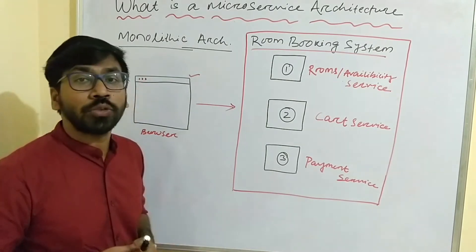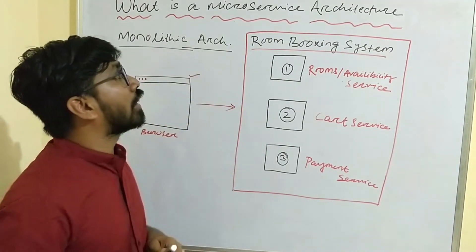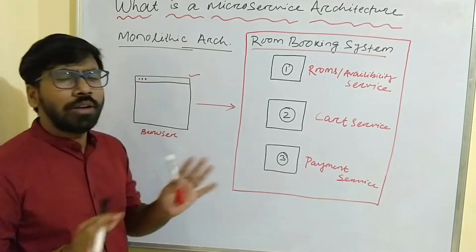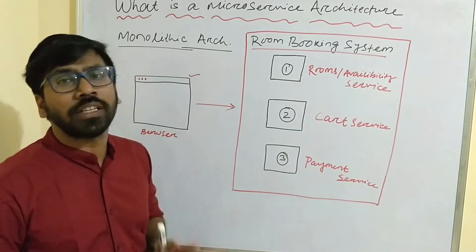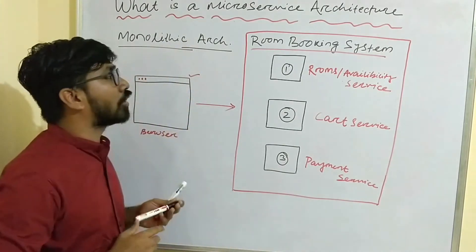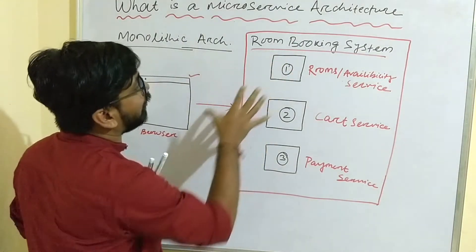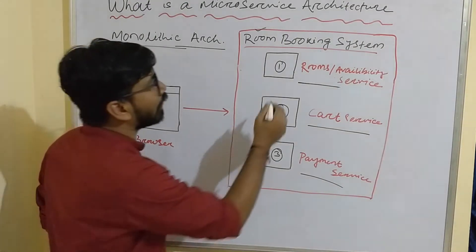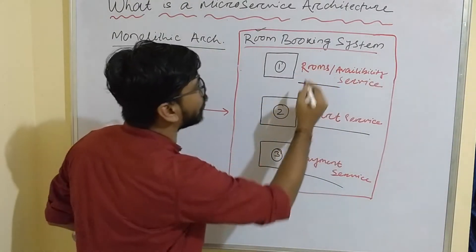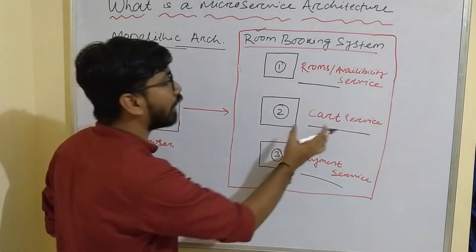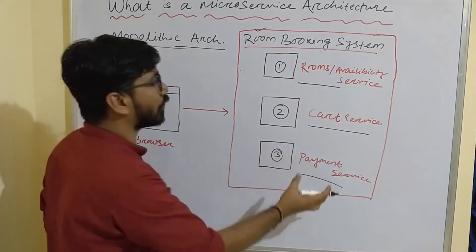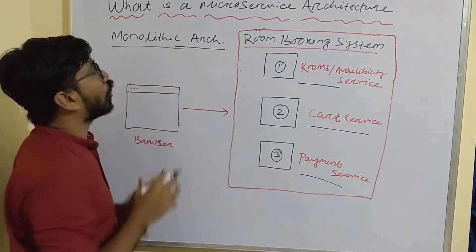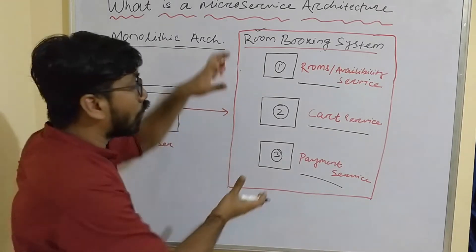Before going to discuss microservice architecture, let me make you understand what is monolithic architecture. I will not tell you any theoretical definition — let's discuss one example: a room booking system. In a room booking system we usually have three services: the first one is room availability service, the second is car service, and the third is payment service. These three services are tightly coupled in one monolithic architecture.